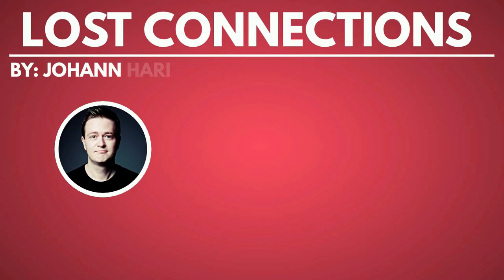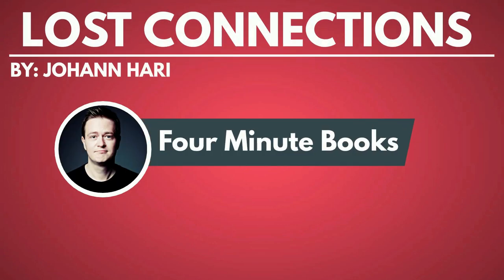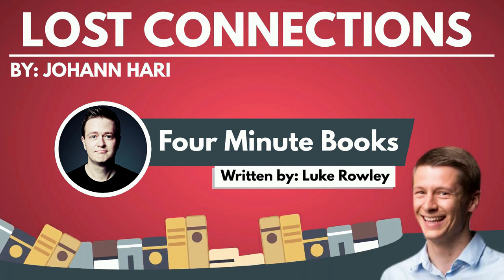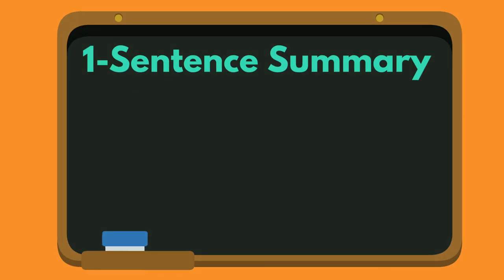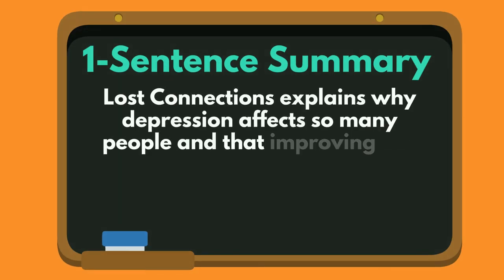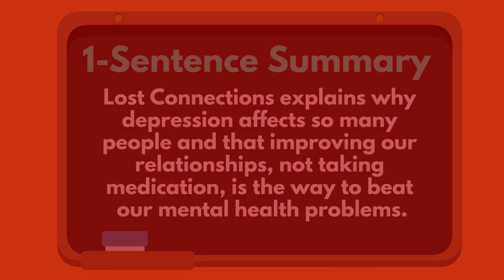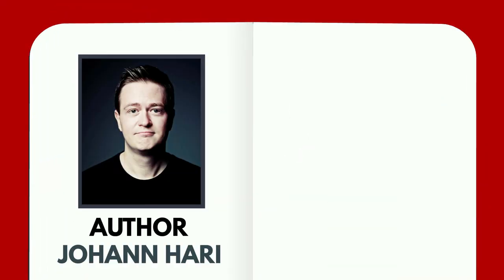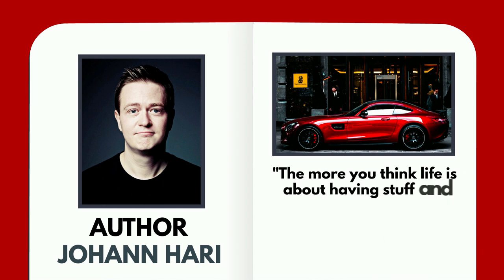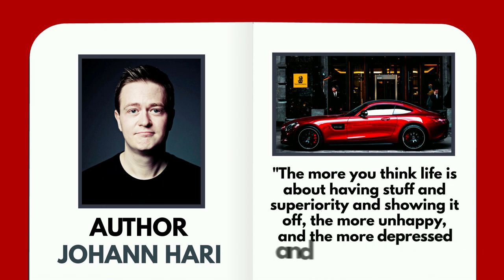Lost Connections by Johan Hari. Summary from 4-Minute Books, written by Luke Rowley and read to you by Jonathan McGinley. One Sentence Summary: Lost Connections explains why depression affects so many people and that improving our relationships, not taking medication, is the way to beat our mental health problems. Favorite quote from the author: The more you think life is about having stuff and superiority and showing it off, the more unhappy, depressed, and anxious you will be.